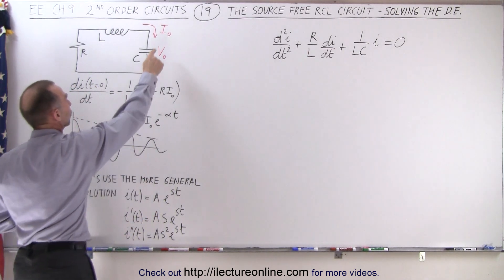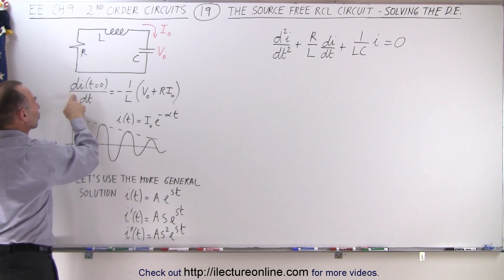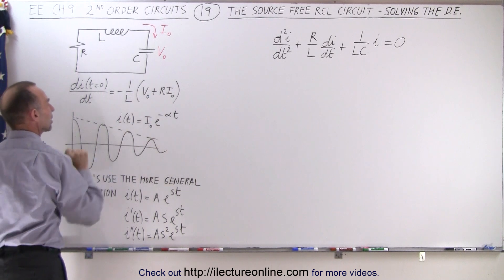We have our initial conditions. Notice we have the initial current through the circuit, the initial voltage across the capacitor, the initial change in the current with respect to time, and time is equal to zero over here.